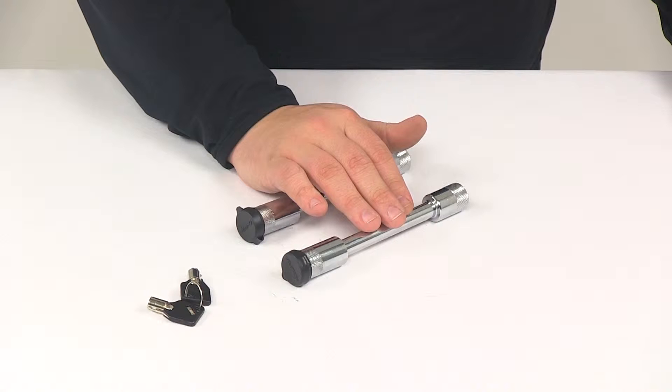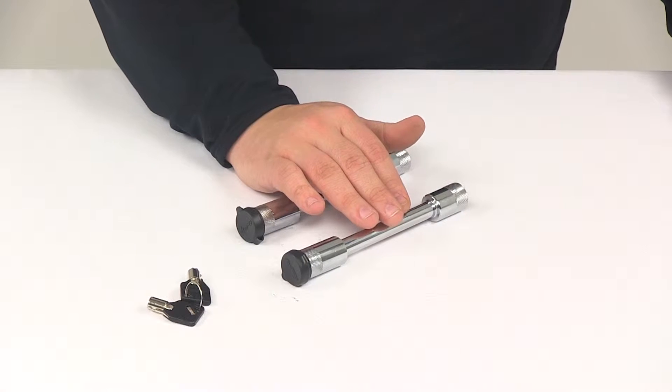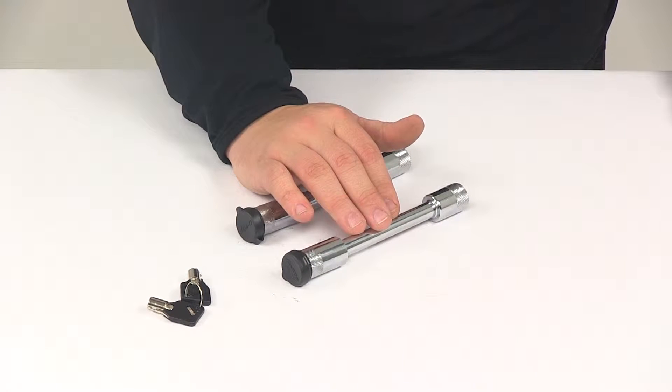And then you're going to have a locking adjustment pin. This is used in place of the standard adjustment pin to secure the ball mount platform to the ball mount.